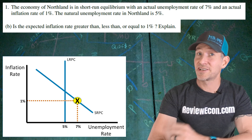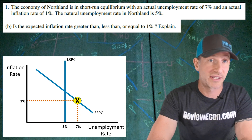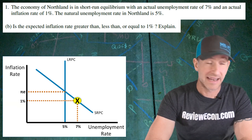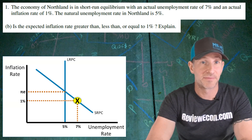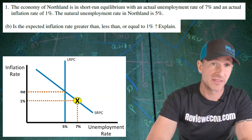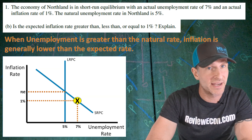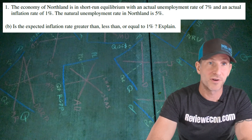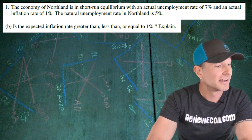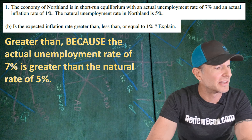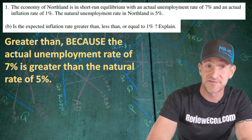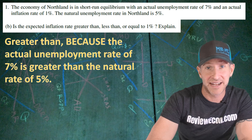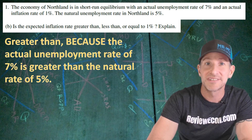To answer this question, it's helpful to remember that at the intersection between the long-run and short-run Phillips curve, that's where we find the expected inflation rate. As we can see on that graph, that intersection is above the current 1% inflation rate. That's because when the unemployment rate is greater than the natural rate, inflation is generally going to be lower than the expected rate. Greater than — because the actual rate of unemployment of 7% is greater than the natural rate of unemployment of 5%.